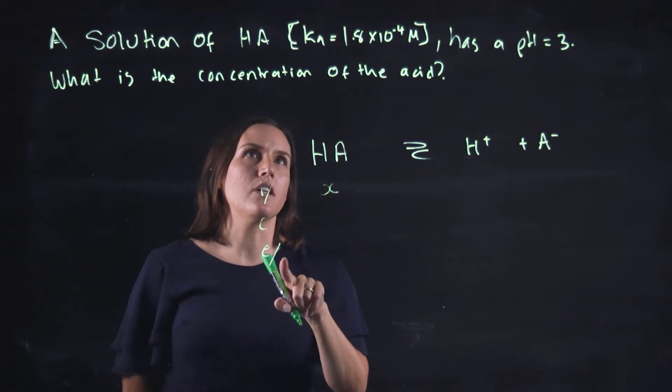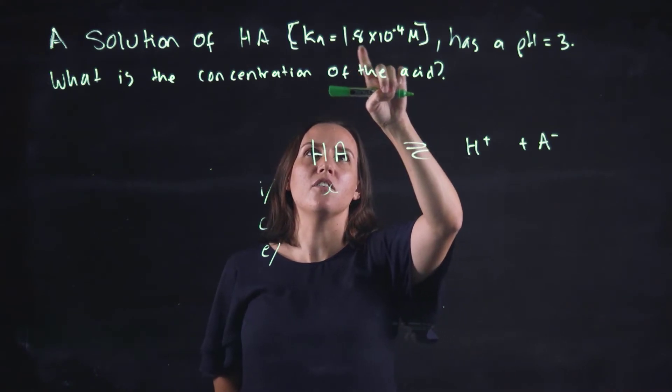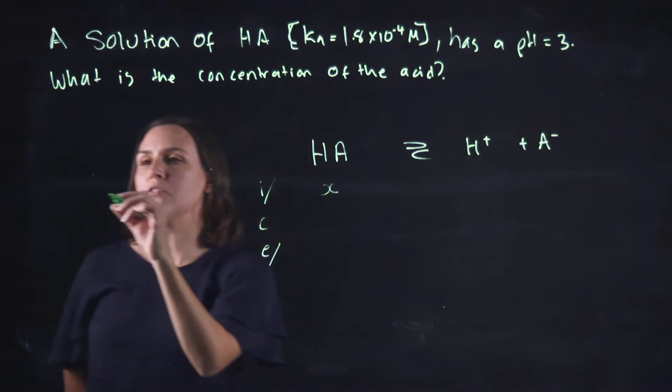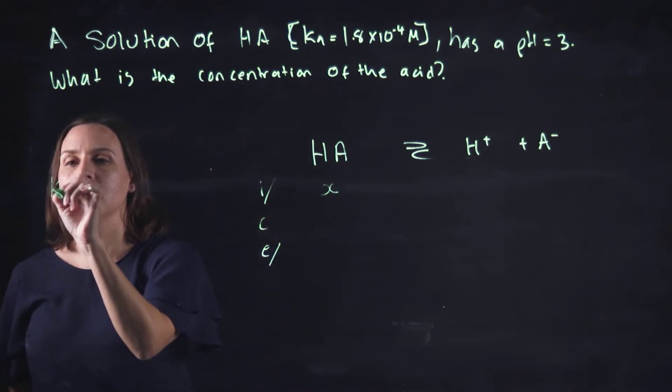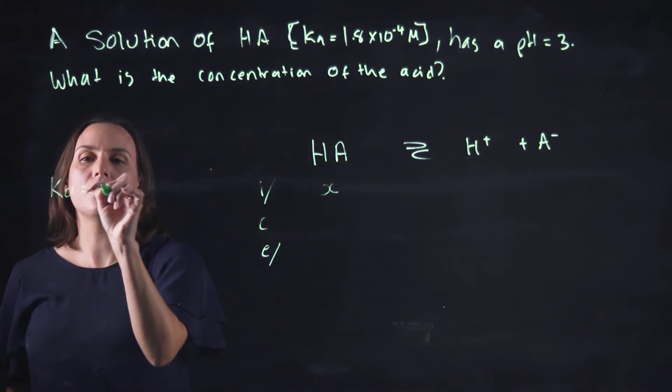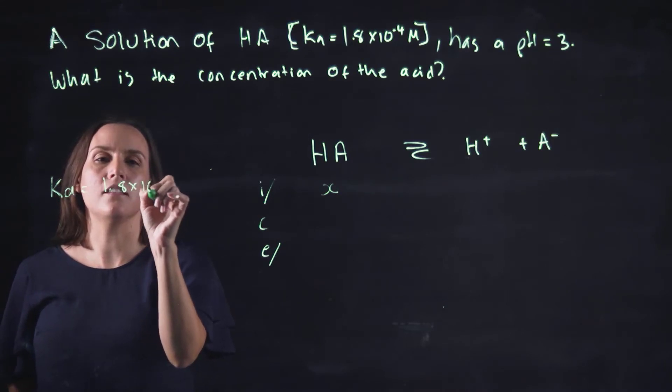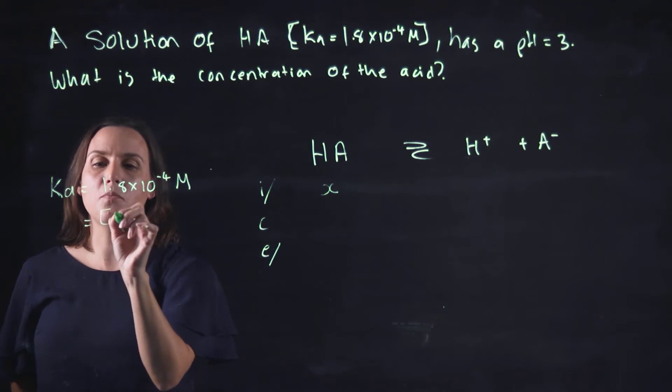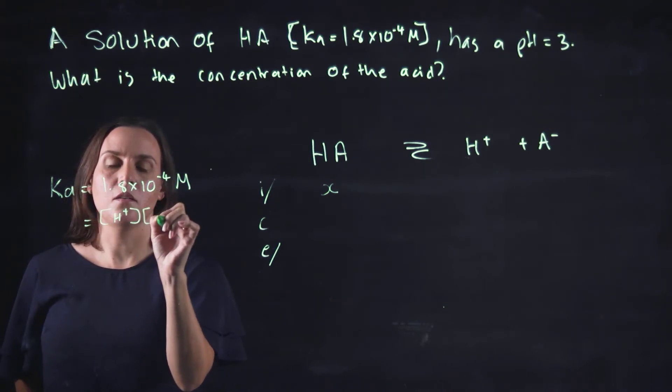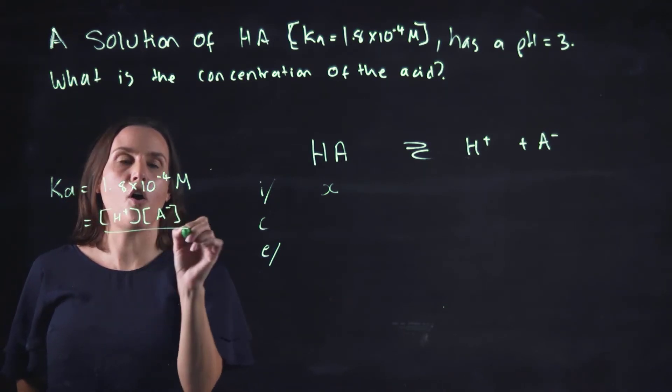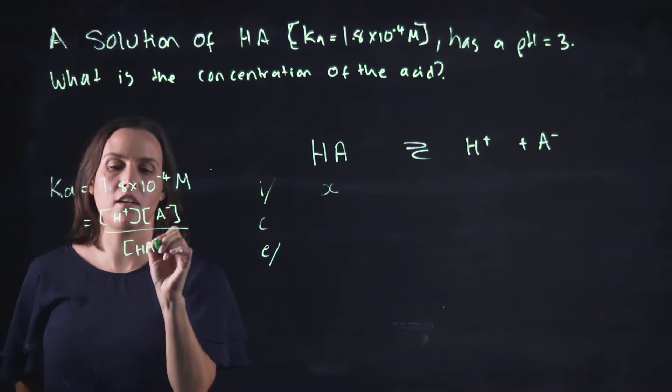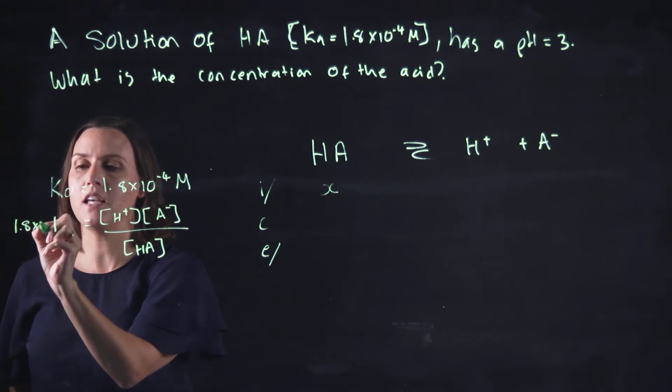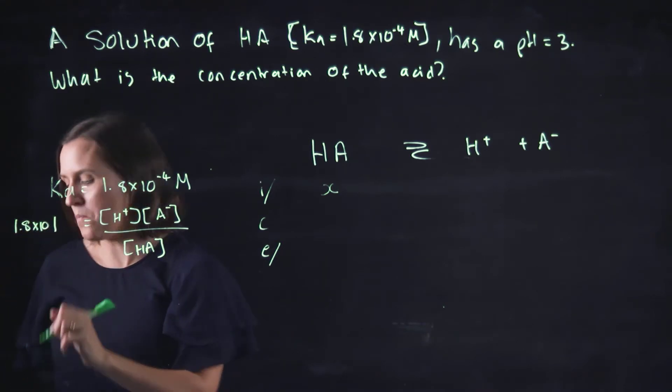So at our equilibrium here, we have a Ka value of 1.8 times 10 to the negative 4. So let's write that down here. So Ka equals 1.8 times 10 to the negative 4 molar. So remember that is my H+, my A- on my HA. So products over reactants. And that equals 1.8 by 10 to the minus 4.